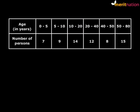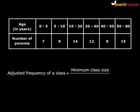So what we need to do is, we need some parameter which will have the same effect as a class size that is uniform. How do we do that? Well, that parameter is called adjusted frequency of a class and this is how we calculate it.